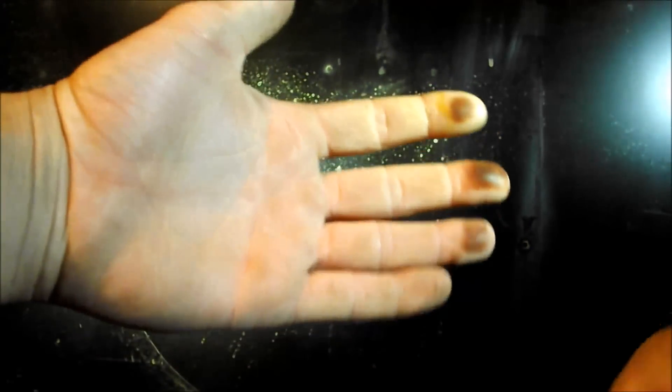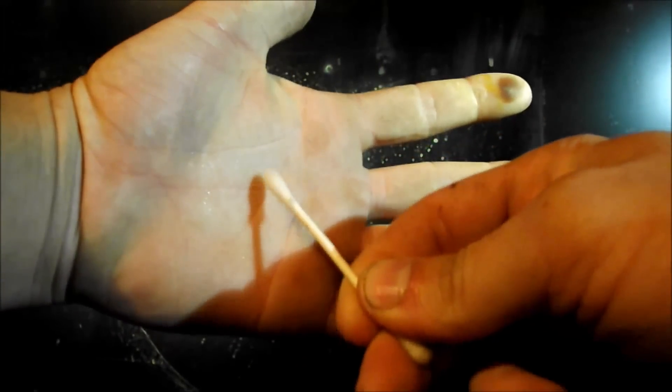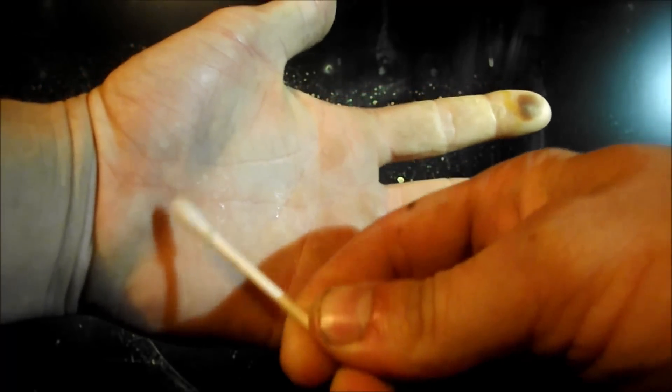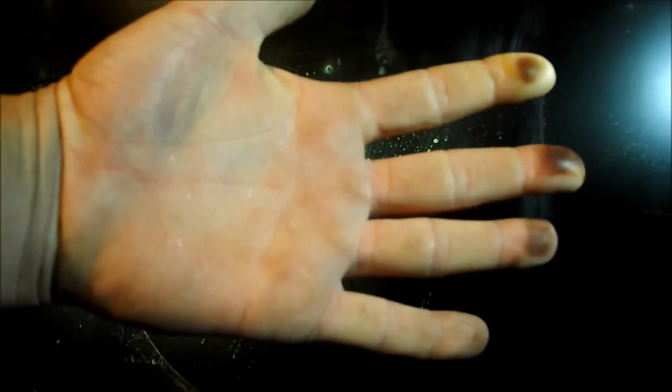So I'm going to go ahead and add a little bit more silver nitrate to my skin. I have some on the end of this Q-tip. Let's go ahead and draw a smiley face or something funny. Here we go. Very nice. And you can see that there's nothing there. It looks completely invisible.